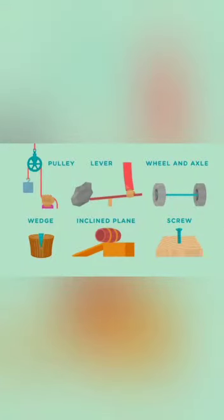There are 6 simple machines: pulley, lever, wheel and axle, wedge, inclined plane, and screw.